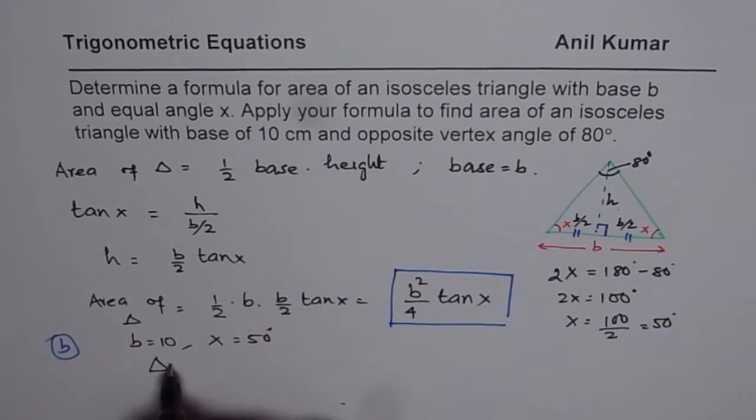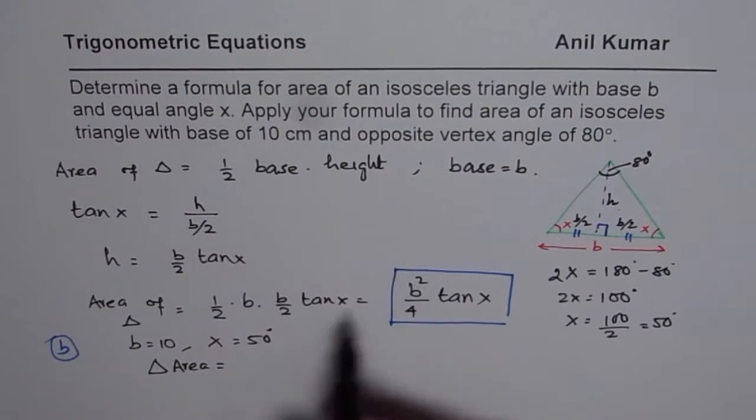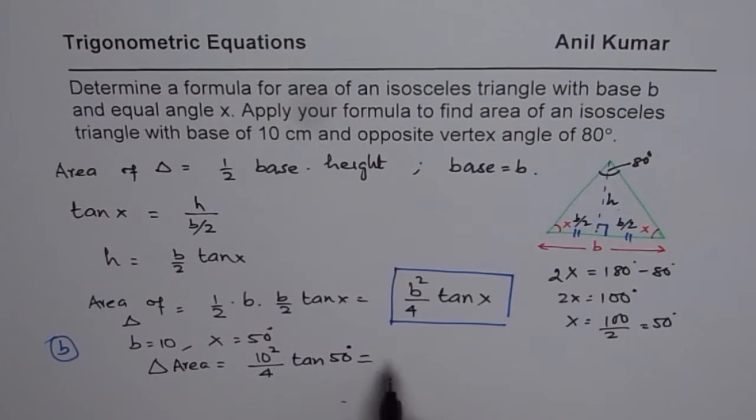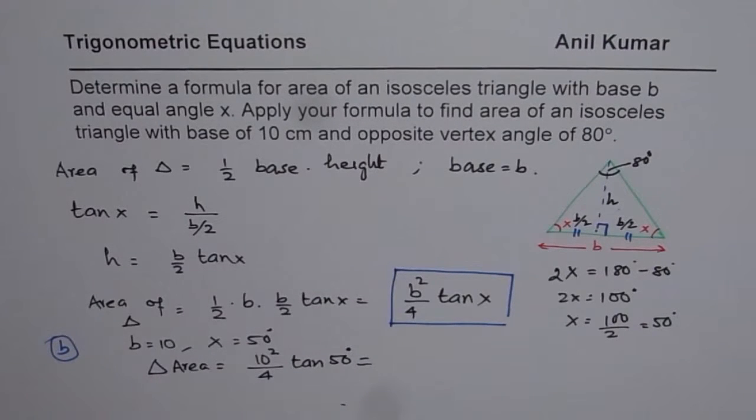In that case, area of the triangle is b squared which is 10 squared divided by 4 times tan of 50 degrees. So this we can calculate and find the answer.